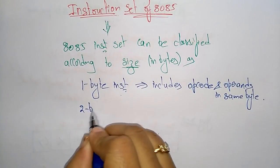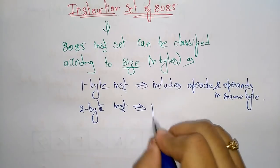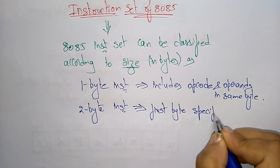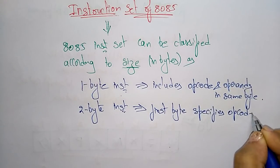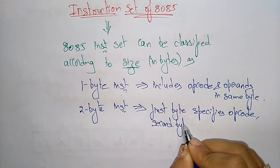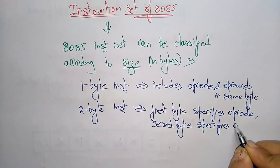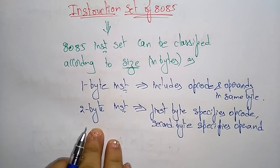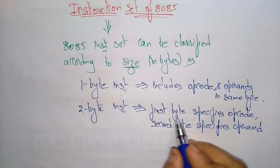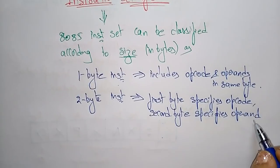Next is a two-byte instruction. A two-byte instruction includes the first byte which specifies the opcode — the operation to be performed — and the second byte which specifies the operand.